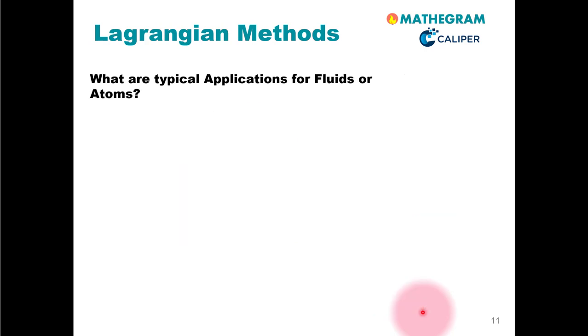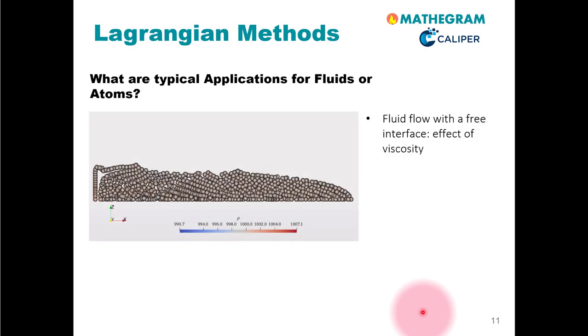Other applications of Lagrangian methods for fluids include the so-called smoothed particle hydrodynamics calculation or simulation. Here you see fluid flow with a free interface. So here we have a fluid, here we have a very low density fluid, for example air. Here you see the density distribution. So in this method, the SPH method, we track the particle positions and also reconstruct the local density of the fluid, which you see is around 1,000. So this is water.